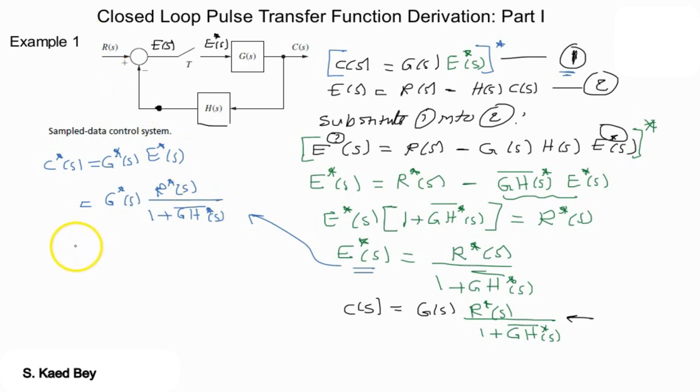Of course when we substitute Z equal to exponential of Sd we get the Z relation. So yes, the pulse transfer function can be obtained for this sampled data closed loop system by simply taking the input and moving it to the left side.